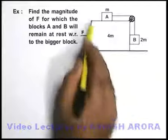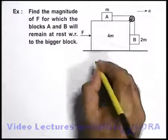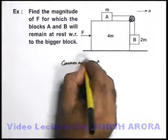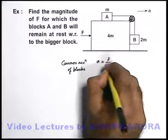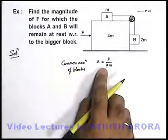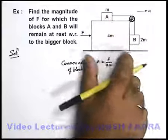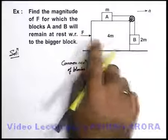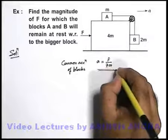Since A and B are not moving with respect to the bigger block, all blocks are moving together toward the right with a common acceleration. We can directly write the common acceleration of the blocks as f upon 7m, because the total mass of the system is 7m, no internal sliding occurs, and the total force equals 7m times a, giving a common acceleration of f by 7m.